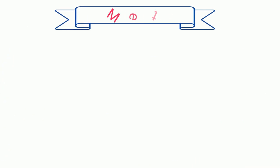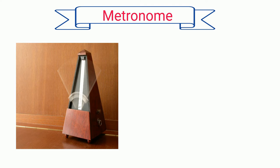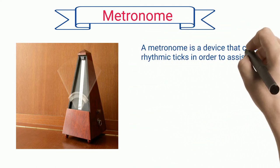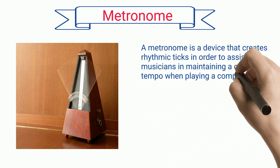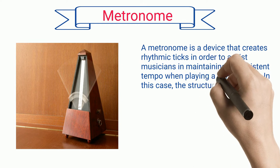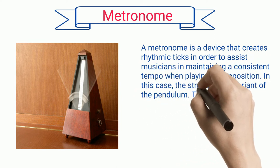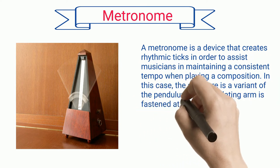Metronome: A metronome is a device that creates rhythmic ticks in order to assist musicians in maintaining a consistent tempo when playing a composition. In this case, the structure is a variant of the pendulum. The oscillating arm is fastened at the bottom of the frame.